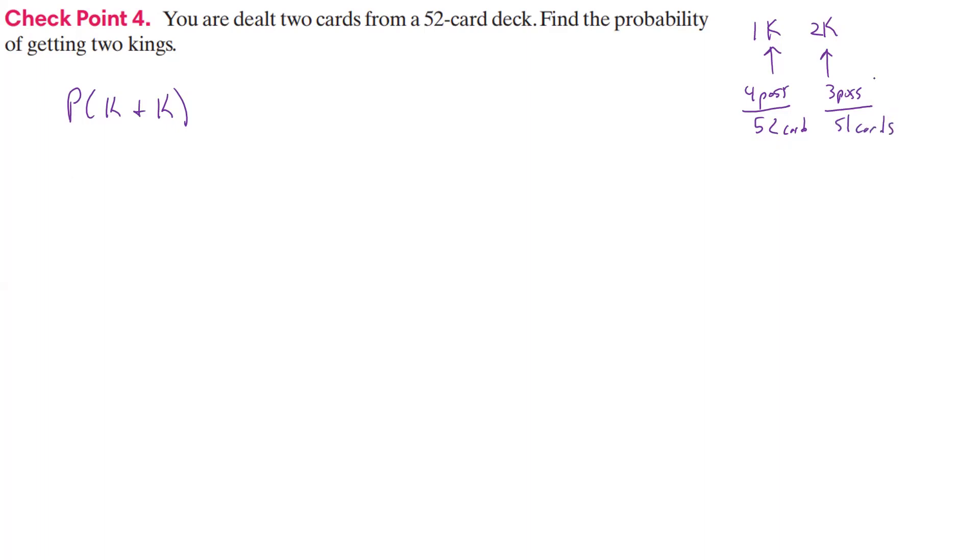So what we really have for our probabilities is 4 over 52 and 3 over 51. So this becomes 4 over 52 times 3 over 51.